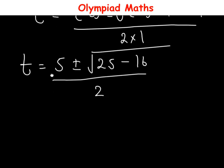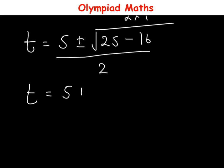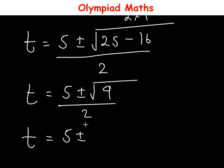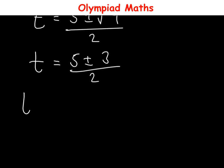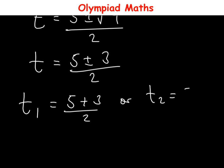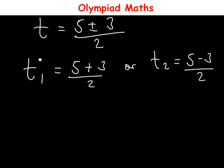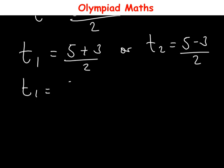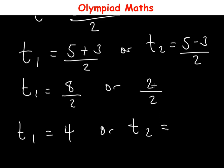So t = [5 ± √9] / 2 = [5 ± 3] / 2. The first value t₁ = (5 + 3) / 2 = 8/2 = 4, and the second value t₂ = (5 − 3) / 2 = 2/2 = 1.